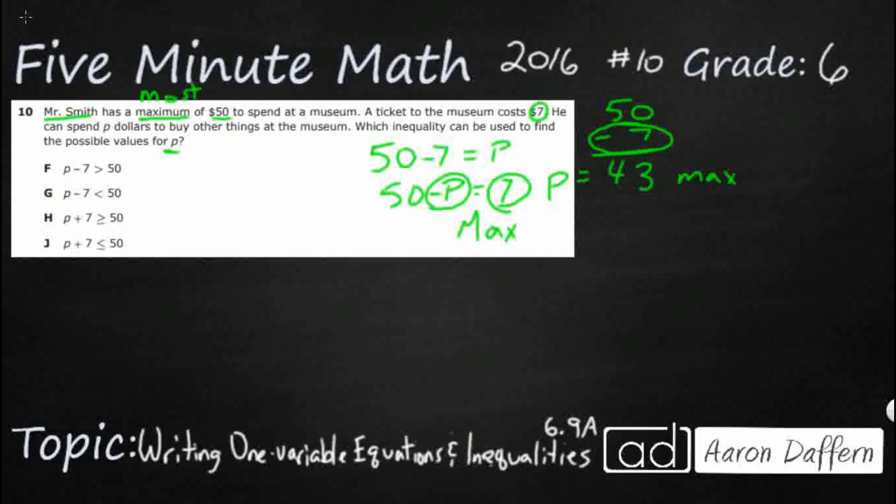What we can do is we can go ahead and just add P. Take a look at this right here. I want to add P to both sides. 50 minus P equals 7. So you can add something to both sides. And it's still going to keep your equation balanced because look what's going to happen.